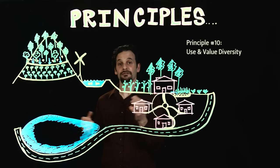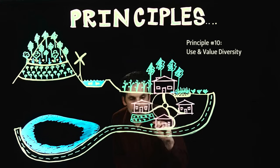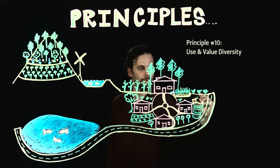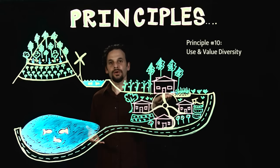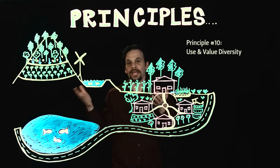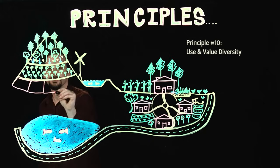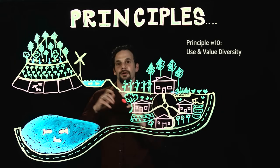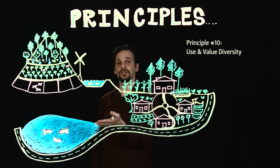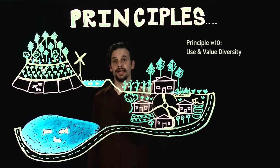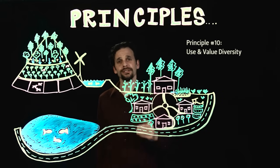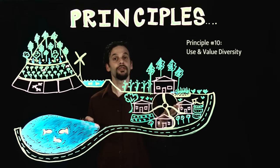Principle 10 is Use and Value Diversity. You can see we've got housing, gardens, wind power, water storage, composting, greywater, forestry, orchards, and now I've added in rotational grazing of animals — both here and in the orchard. I've also added more trees and gardens around the homestead, and fish to the pond. Diversity is one of the key aspects of permaculture — we want to conserve diverse native habitats and make our human habitats rich with an abundance of many productive elements. Diversity is also resilience: if one part of our system fails, there are others that will thrive.